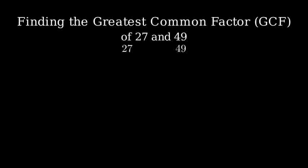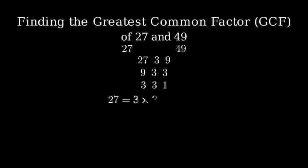Let's start with 27. 27 divided by 3 equals 9. 9 divided by 3 equals 3. And 3 divided by 3 equals 1. So 27 equals 3 cubed.